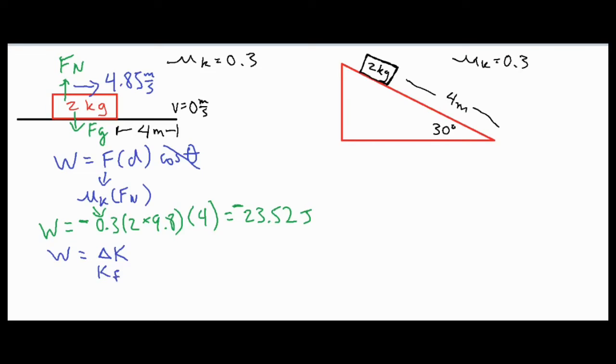In this case it's a delta K, so the final minus the initial value. We already know the final value is zero because we come to rest, so one half mv squared would definitely be zero. So we have zero minus our initial of one half 2 times 4.85 squared, and that would leave us with negative 23.52 joules. So that's our second method.